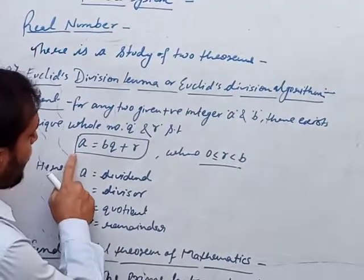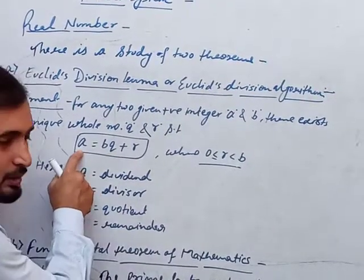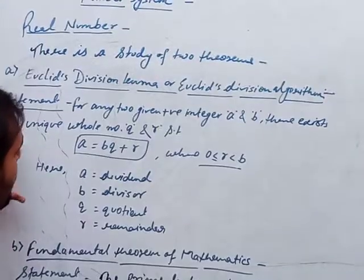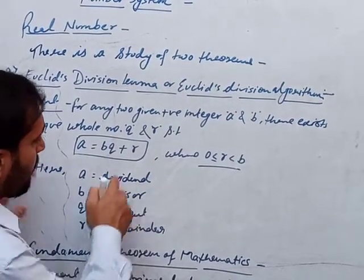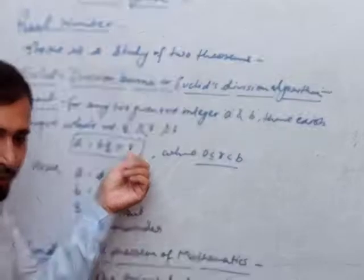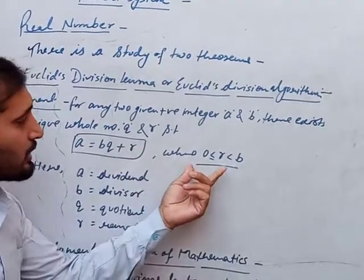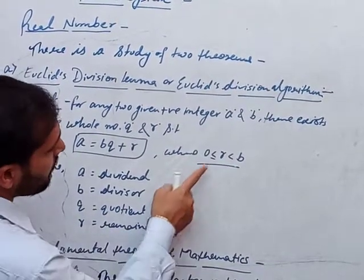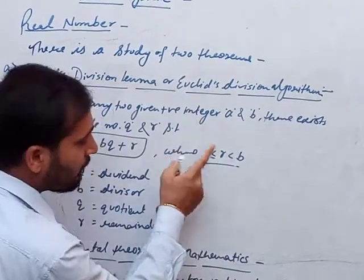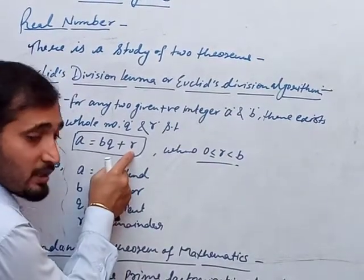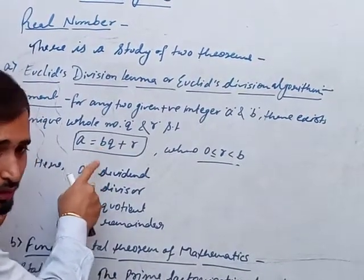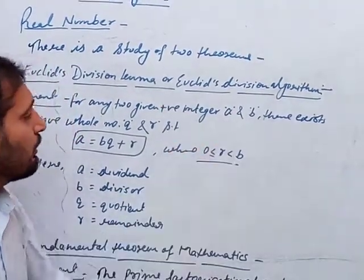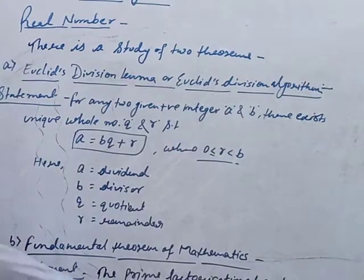The relation is a equals bq plus r. The most important point is the criteria for r: r lies between 0 and b, meaning r should be less than the divisor. r must be smaller than the divisor and r must be greater than or equal to zero.